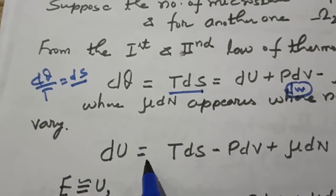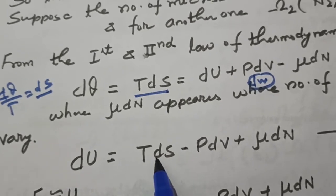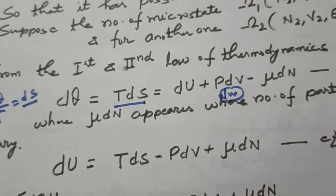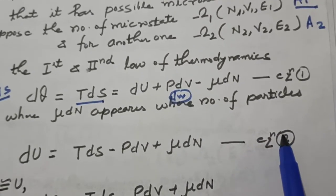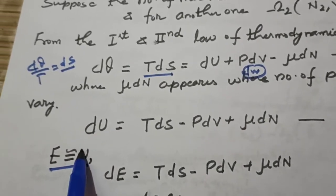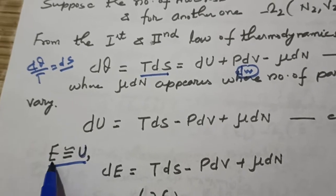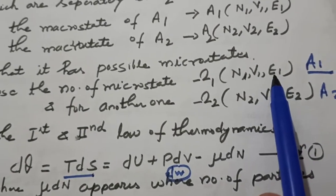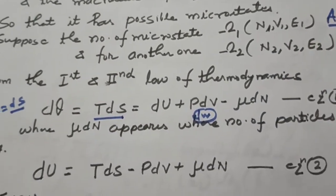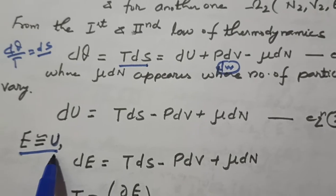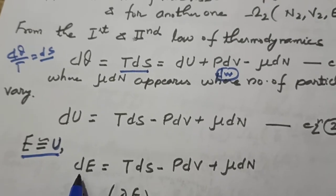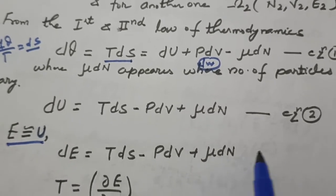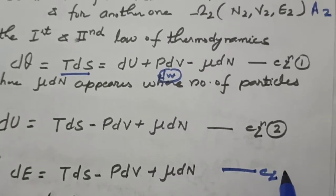From this, we can also write dU equals TdS minus PdV plus μdN. We will replace U by E, since in our consideration the energy is denoted E. So dE equals TdS minus PdV plus μdN. Let this be equation 3.